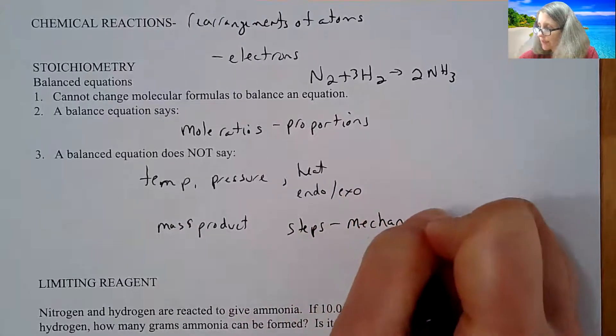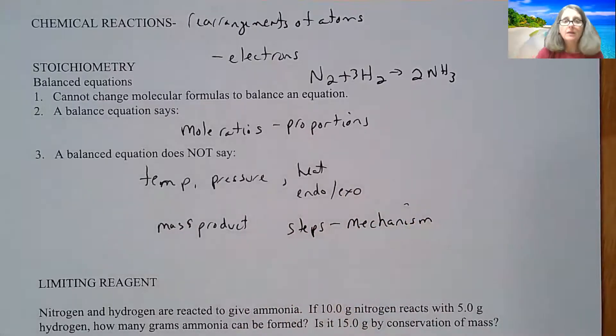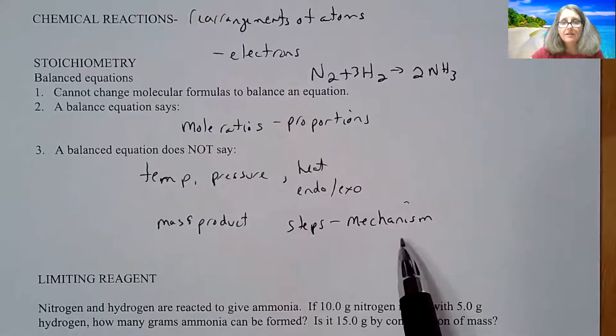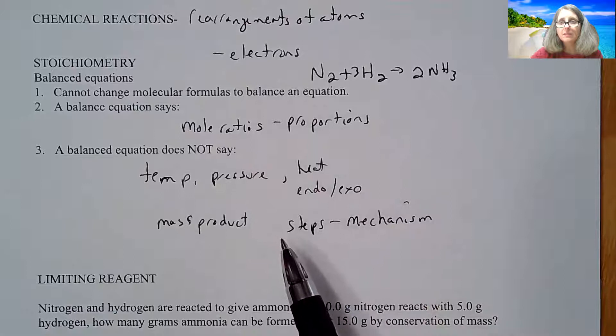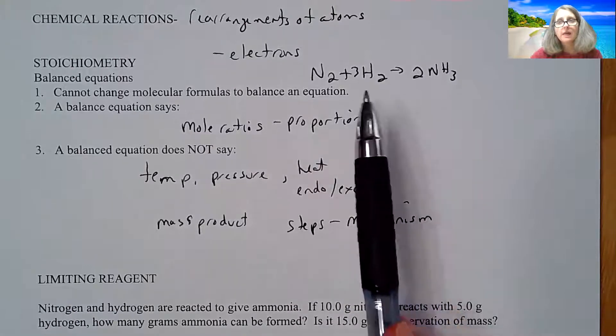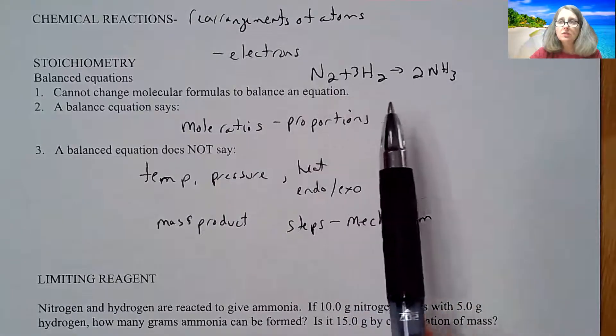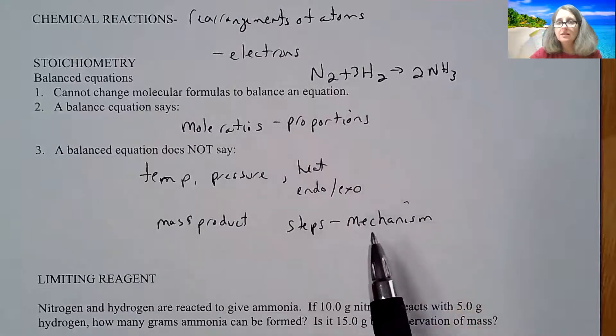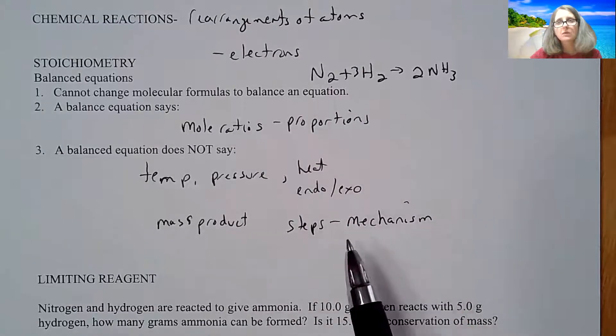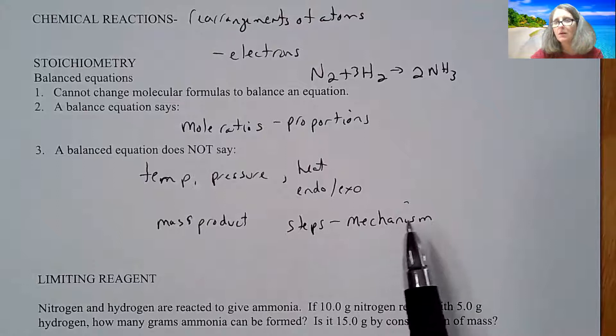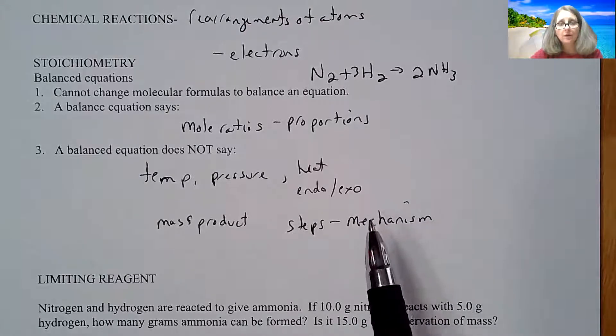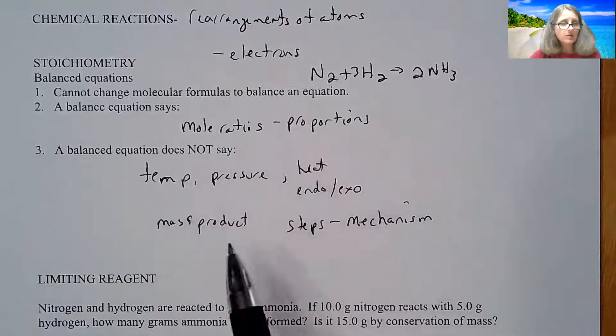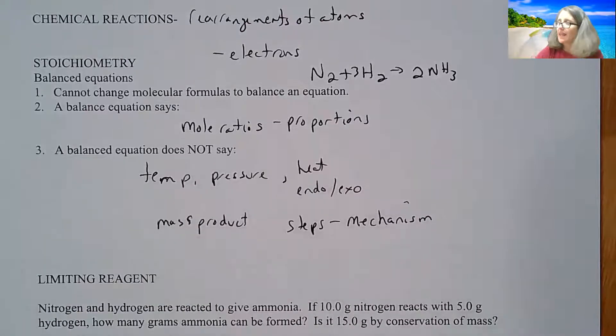And the steps it takes. One thing we are going to focus on a lot more than we did in first year chemistry is the fact that when nitrogen reacts with hydrogen, there might be multiple steps it goes through to make that product. Generally, a balanced equation is just the overall of the reaction. It doesn't give what we call its mechanism. When we get to second semester, we're going to be talking about mechanisms and what happens at each one of those steps. So the balanced equation does give us a lot of information, but it doesn't give us everything.